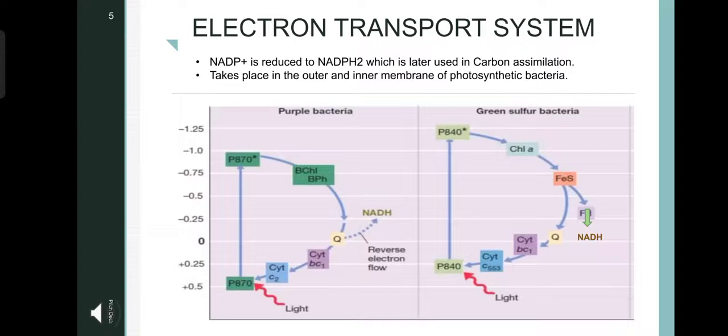This electron comes from the reduced sulfur compounds. During the transfer of electron from the quinone pool, the electrons are forced backward against the electron gradient and reduces NADP plus to NADPH2. Hence, this process is also called as reversed electron transport, whereas in green sulfur bacteria, the excited electrons from the P840 reaction center moves to P870 and then through a series of electron carriers, namely chlorophyll A, ferredoxin, and ferrocyanide, which directly reduces NADP plus into NADH2 and finally reaches the reaction center through the quinone, cytochrome BC1, and cytochrome C553 complex.